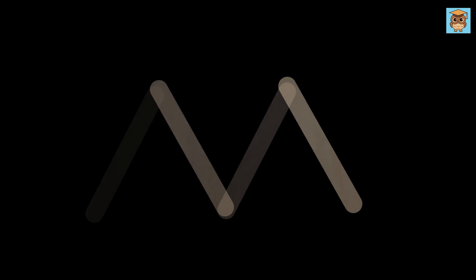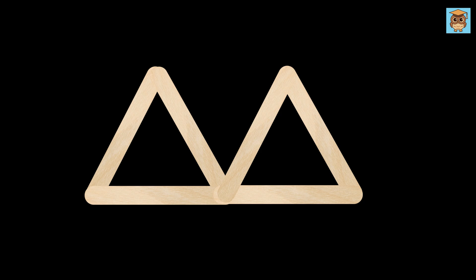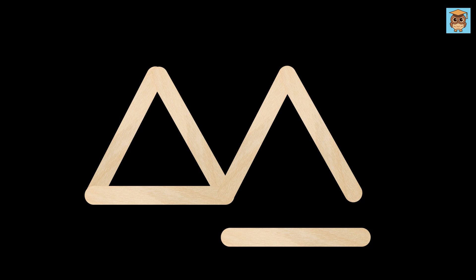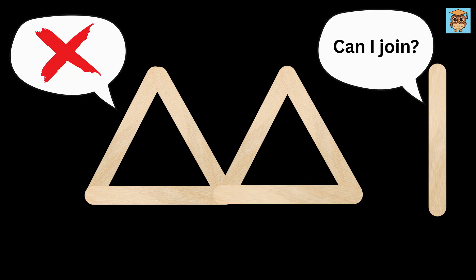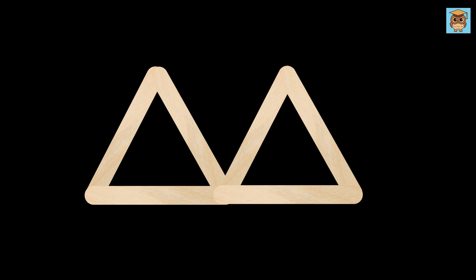Here's the first puzzle. We have six ice cream sticks arranged in a certain way and the goal is to make four triangles using them. The challenge is that you are only allowed to make one move. This means you can move just one stick, no more. You cannot add any extra sticks and you cannot break or bend the ones already there. All the sticks must stay whole and be used as they are.